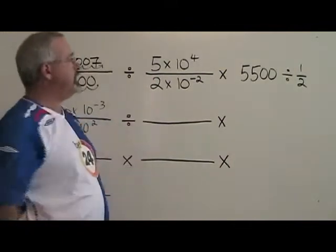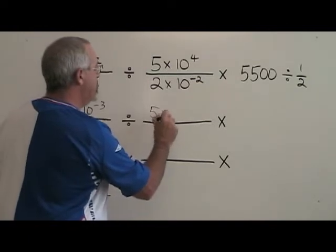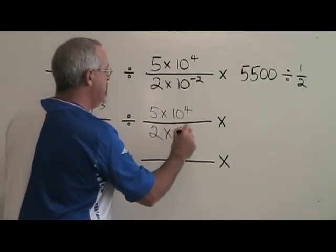The second fraction is already in scientific notation. So I'm just writing it down here. 5 times 10 to the 4 over 2 times 10 to the negative 2.